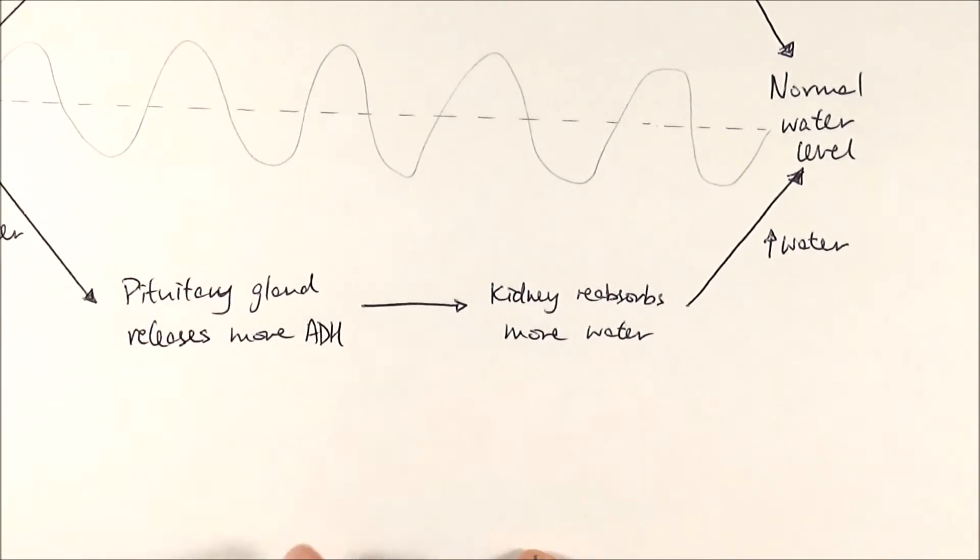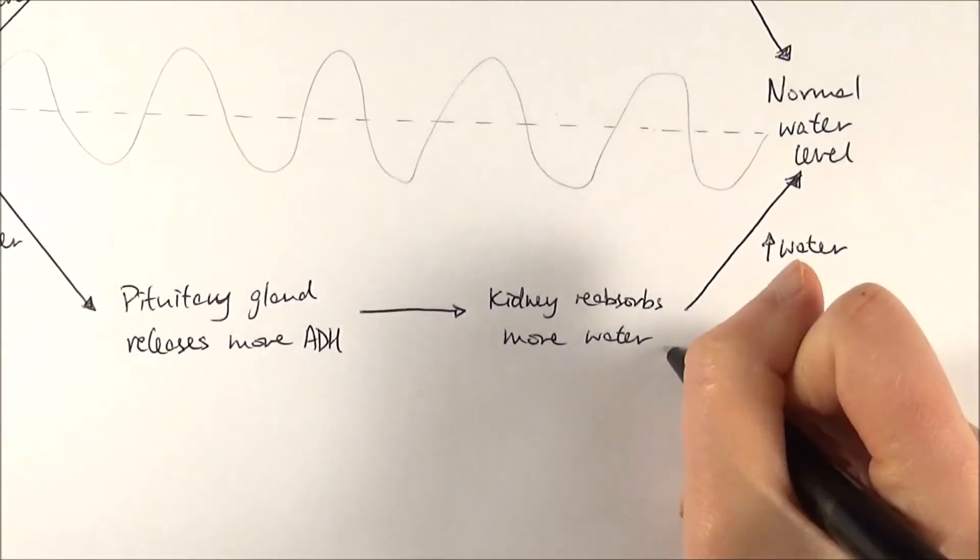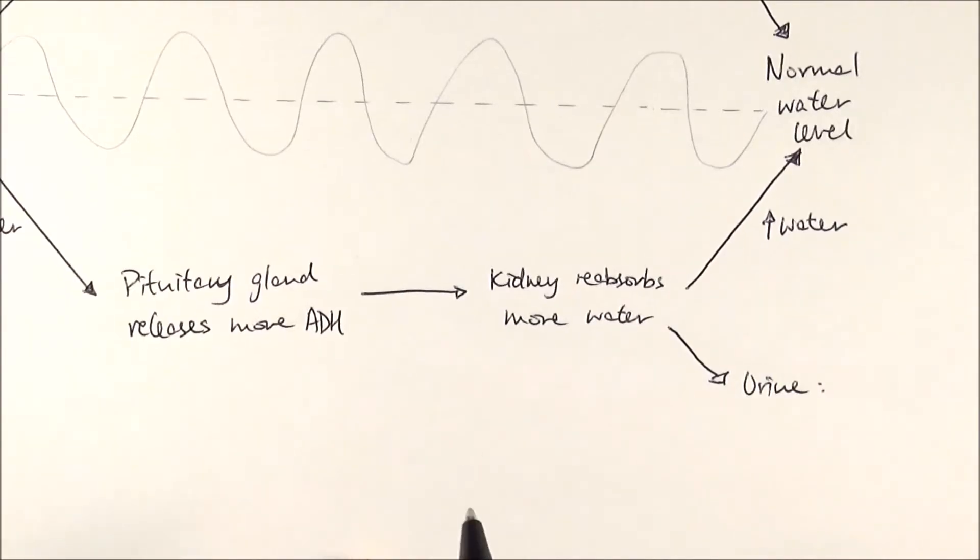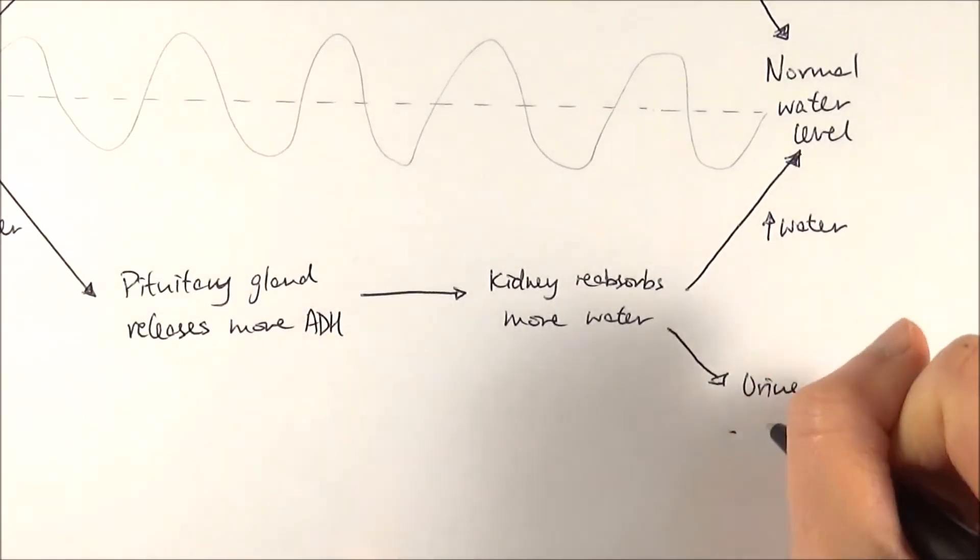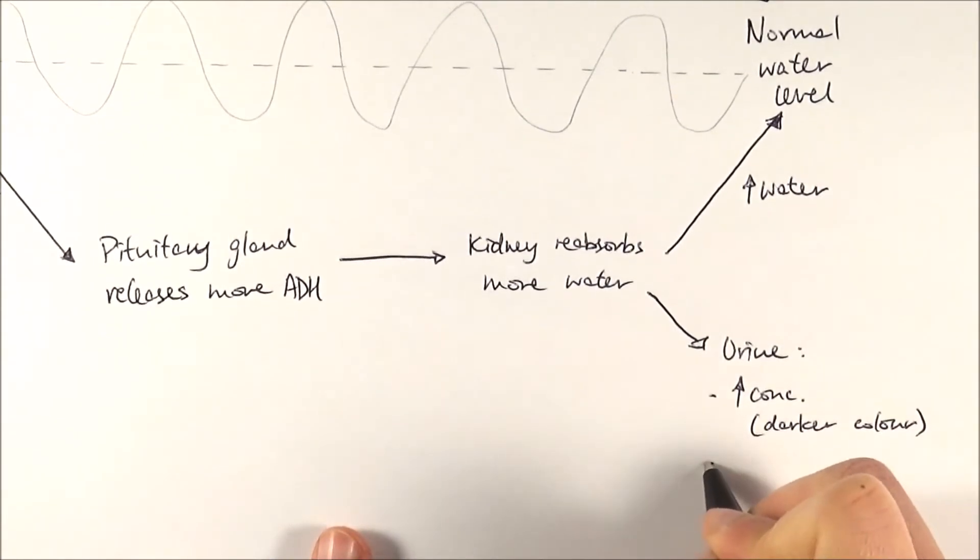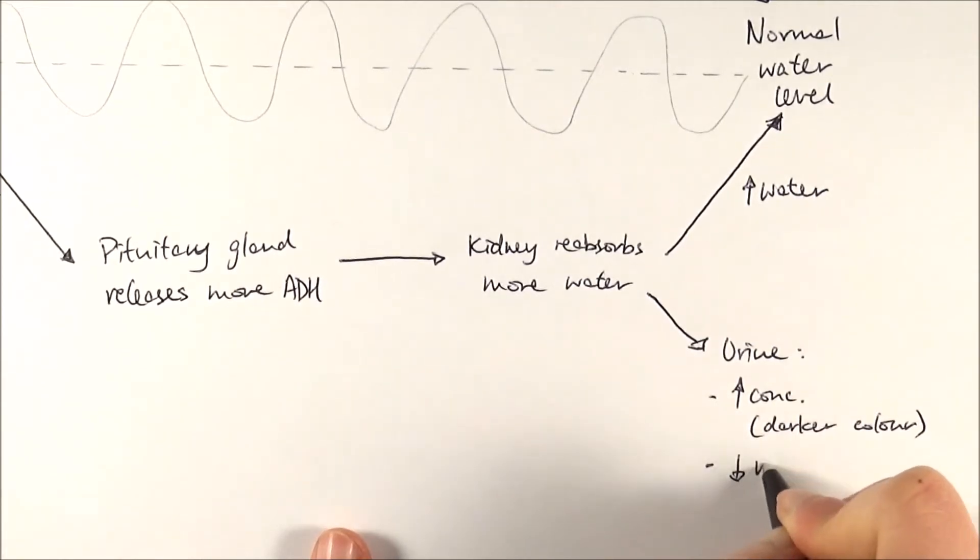Considering what the urine produced will be like, because there is less water being retained in the filtrate, that means it's going to be more concentrated in terms of everything. So therefore, it will be quite a dark color. And apart from that, there's less water in the filtrate, that means the volume will be smaller.